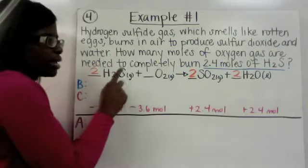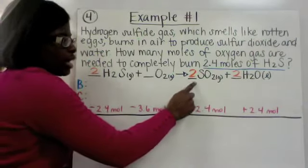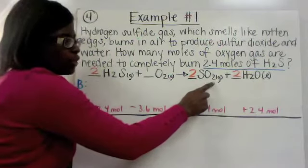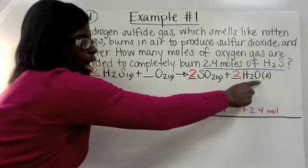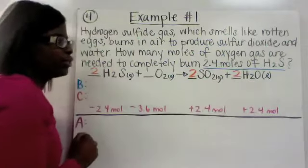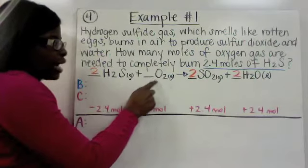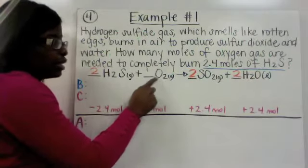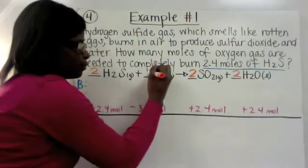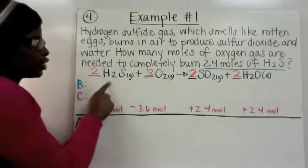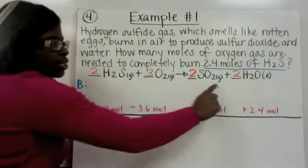Now your hydrogen are balanced and your sulfur are balanced. Onto your oxygen: when we added the two over here, that gave us four oxygen — two times two is four. This coefficient of two gave you another two oxygen, so two plus four gives you a total of six. We need six on the reactant side, so six divided by the subscript of two gives you a coefficient of three. Now your hydrogen are balanced, your sulfur is balanced, and your oxygens are balanced.